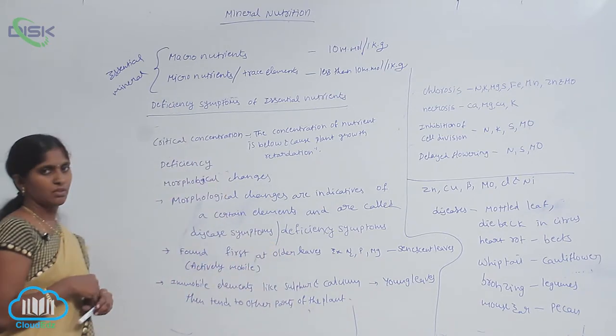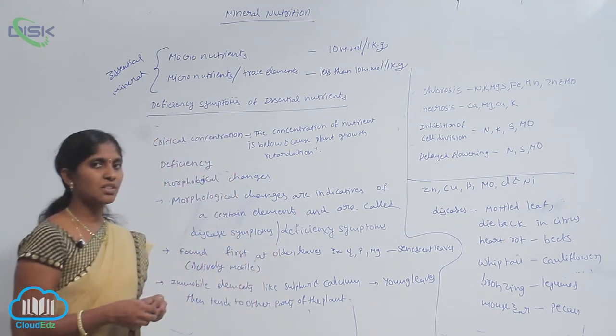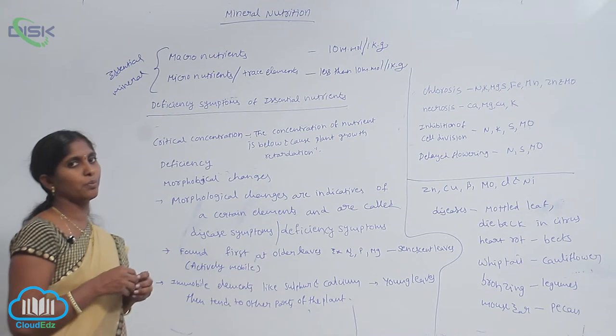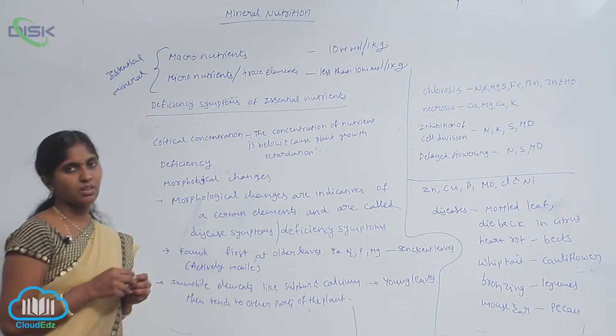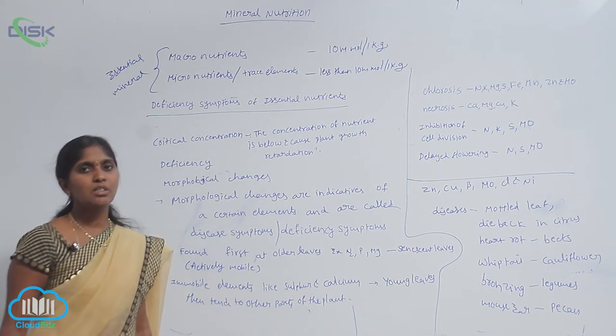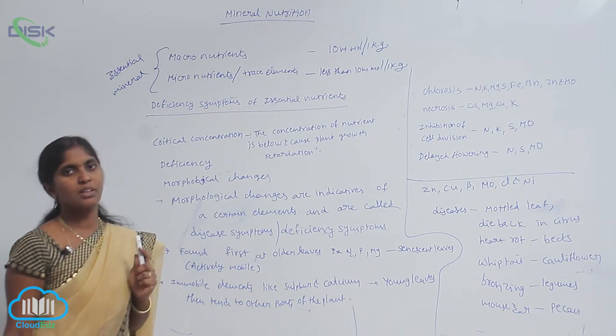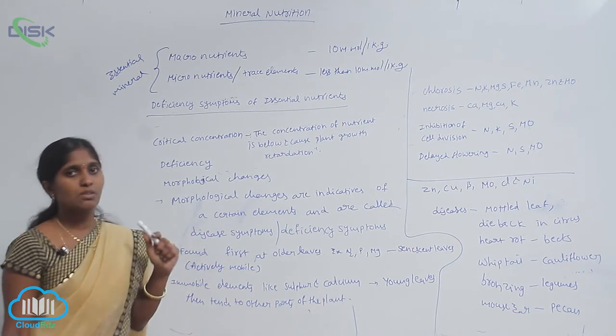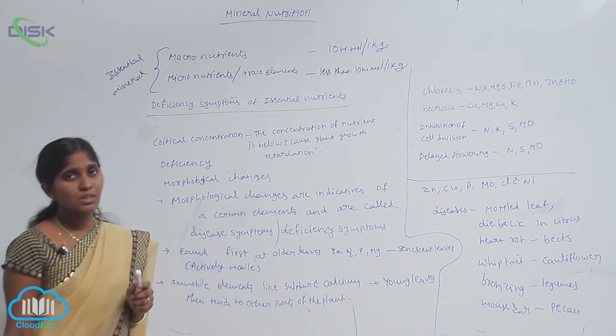Critical concentration. What is critical concentration? Very little concentration is needed, but when the concentration of nutrient is below this, it causes plant growth retardation. Critical concentration means there is a deficiency of nutrient. Nutritional deficiency is measured by critical concentration and also by observing symptoms.